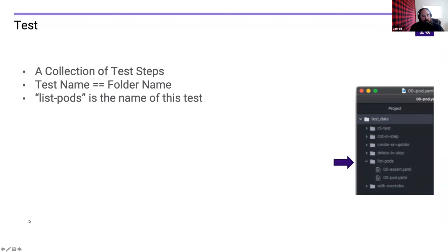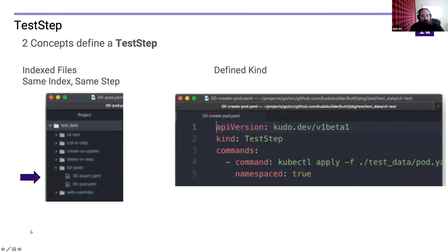A test is simply a collection of test steps in a folder — for instance, this is the 'list pods' test. Within the test steps, we have a test step that runs a command. The command is your gateway into running things fairly raw — you can use it to spin up an operator before doing anything else. This is your side-effect mechanism into Cuddle so that you can bring it into your environment without having it just be a bunch of YAML going back and forth.